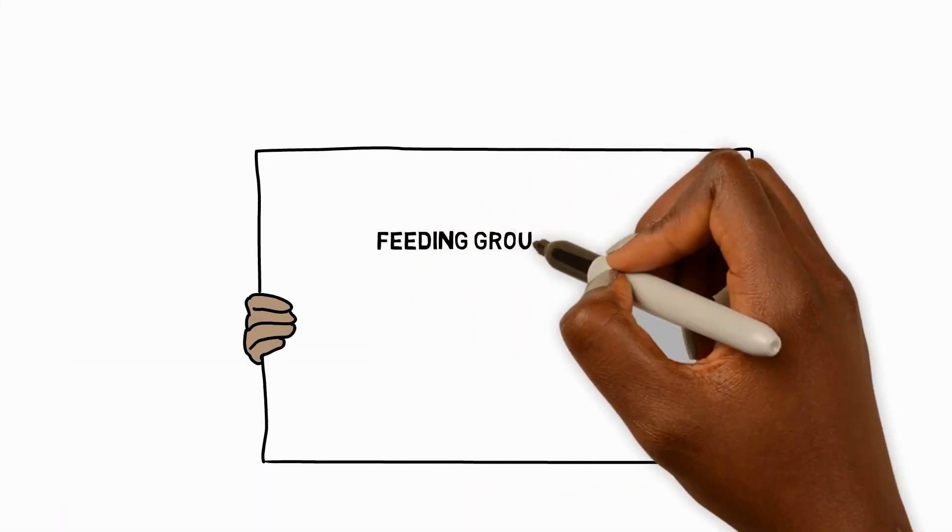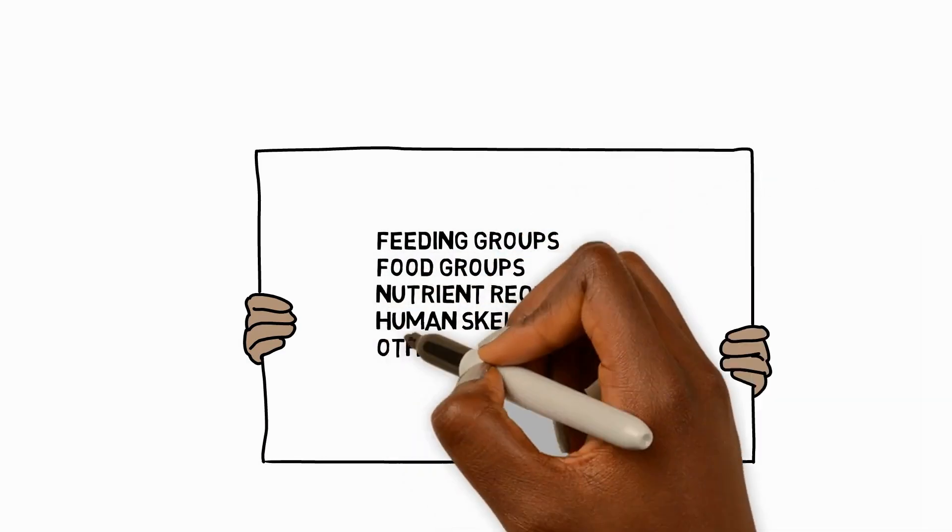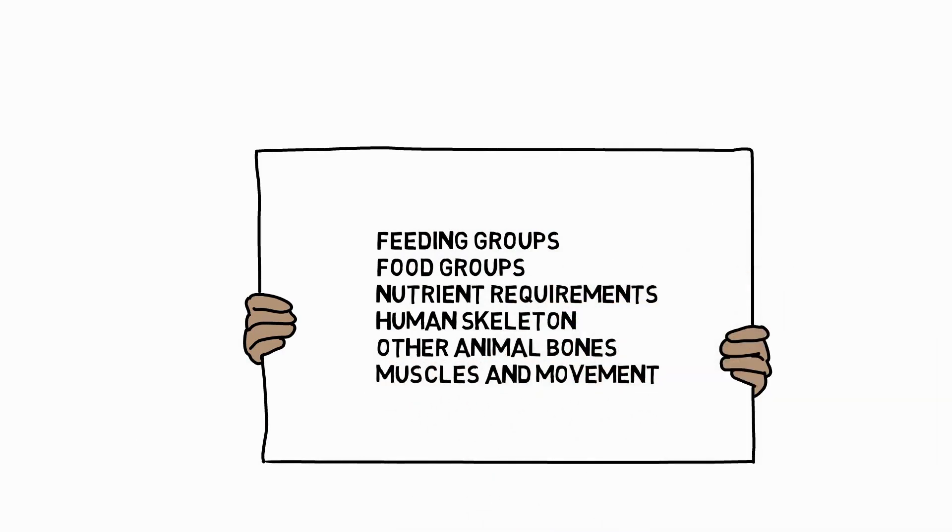In this video we'll look at the different animal feeding groups, food groups, nutrient requirements, the human skeleton, other animal bones, and finally muscles and movement.